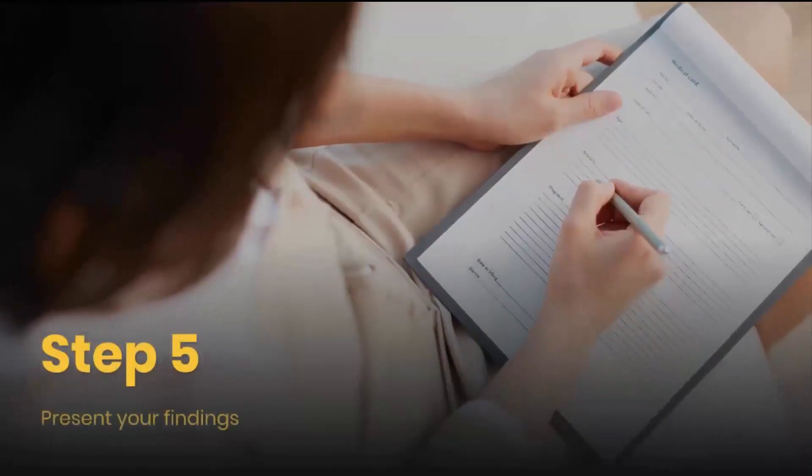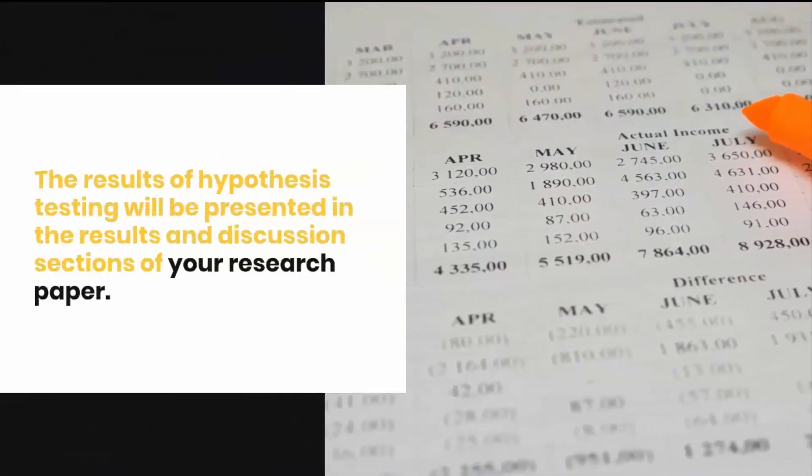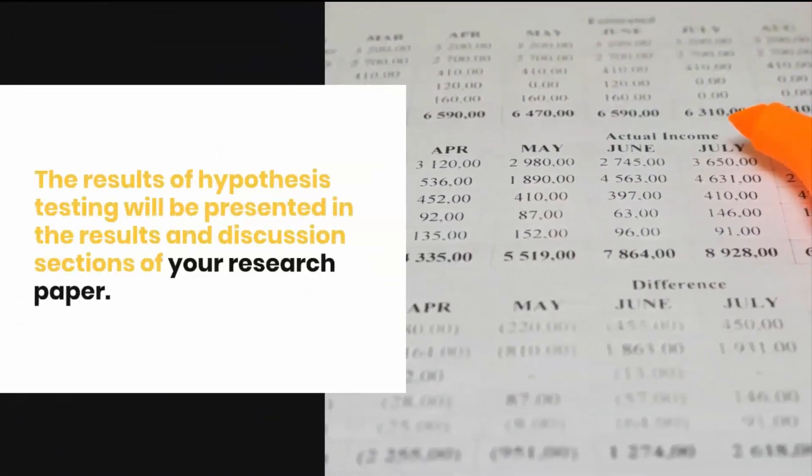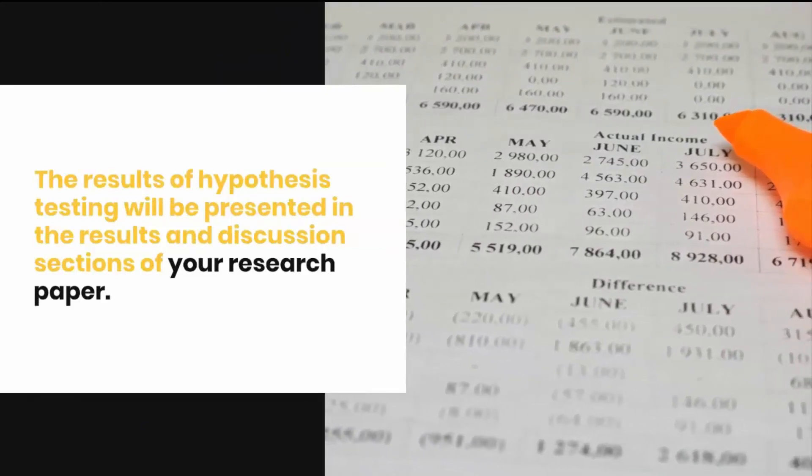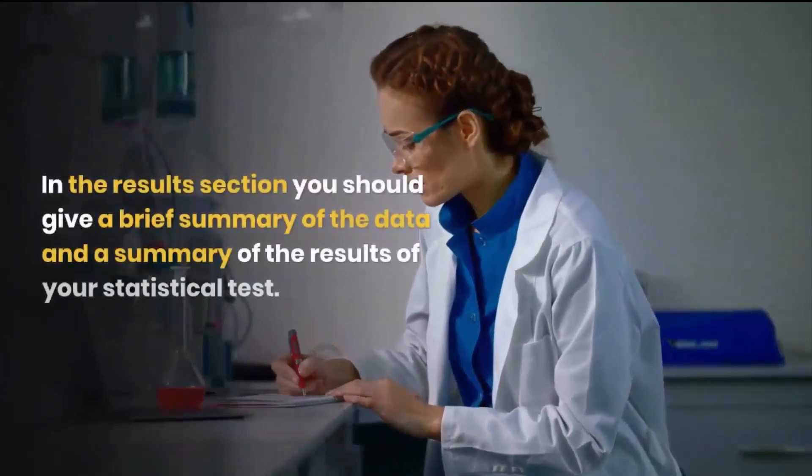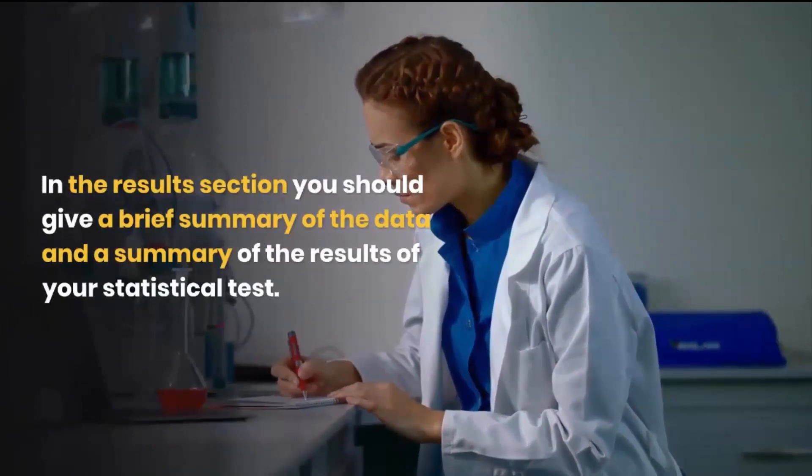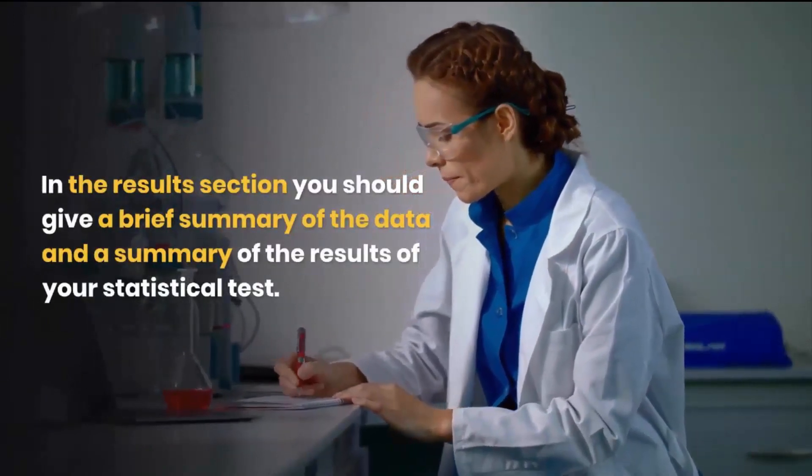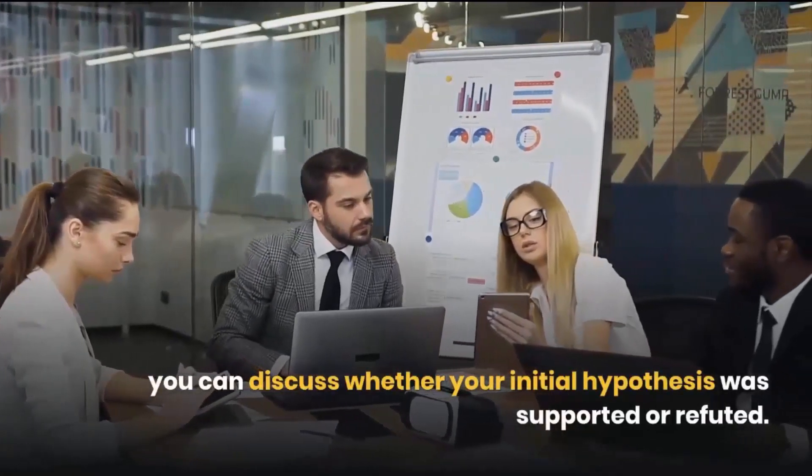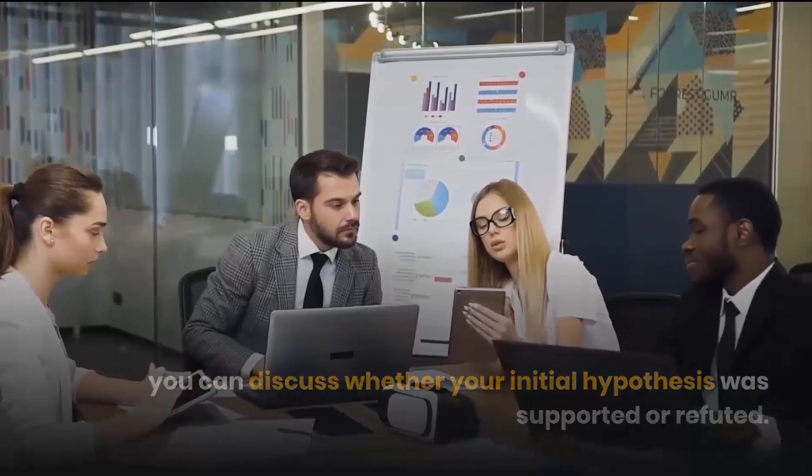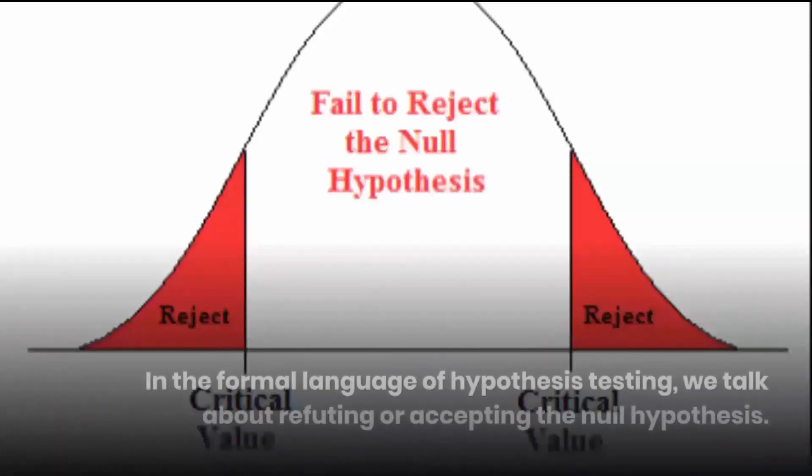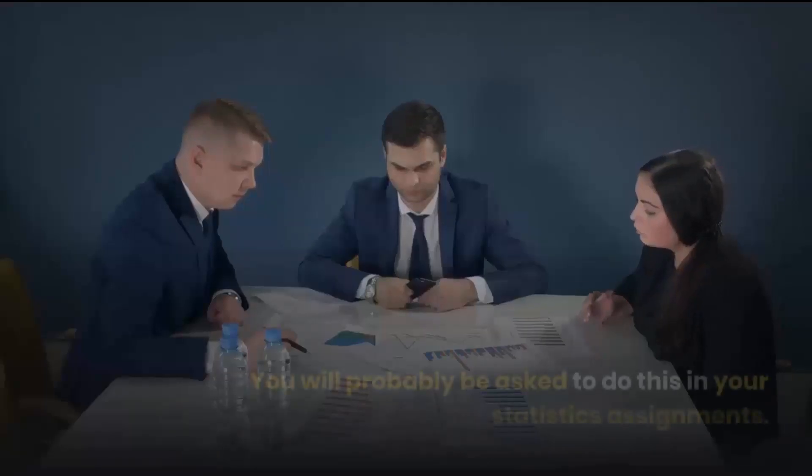Step 5: Present your findings. The results of hypothesis testing will be presented in the results and discussion sections of your research paper. In the results section you should give a brief summary of the data and a summary of the results of your statistical test, for example, the estimated difference between group means and associated p-value. In the discussion, you can discuss whether your initial hypothesis was supported or refuted. In the formal language of hypothesis testing, we talk about refuting or accepting the null hypothesis. You will probably be asked to do this in your statistics assignments.